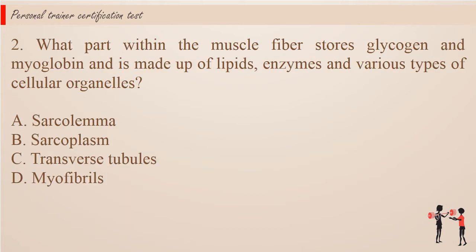Question 2. What part within the muscle fiber stores glycogen and myoglobin and is made up of lipids, enzymes and various types of cellular organelles? a. Sarcolemma. b. Sarcoplasm. c. Transverse tubules. d. Myofibrils.